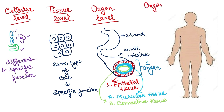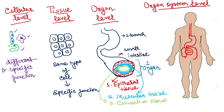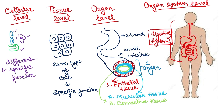Along with the organ level comes the organ system level. Here, many organs work together to perform a particular function. For example, in the digestive system, the stomach, small intestine, large intestine, and liver are all working together. Different organs have specific roles in this organ system, and each organ is made up of different types of tissues.